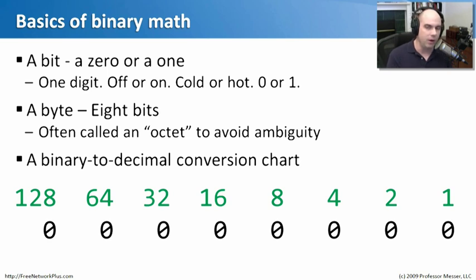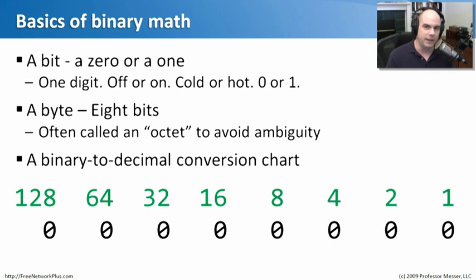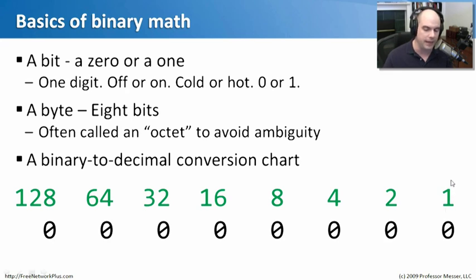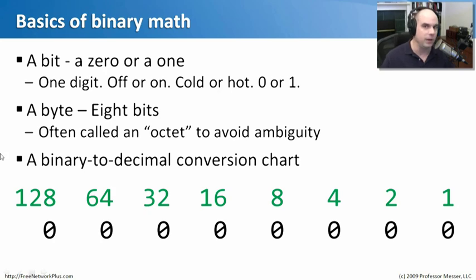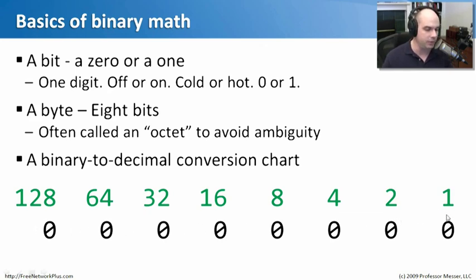One very important thing as we go through subnetting — there are about four different videos on binary math and subnetting — you'll need to know this binary-to-decimal conversion chart. In fact, the first thing you do when you sit down at your Network Plus exam, this will probably be one of the things you write down on the blank sheet of paper they give you. Starting on the right side, put a 1, then double it to 2, then 4, 8, 16, 32, 64, and 128. You can even keep going to 256, 512, 1024. But for an octet of eight bits, this chart will take care of you in almost every situation.